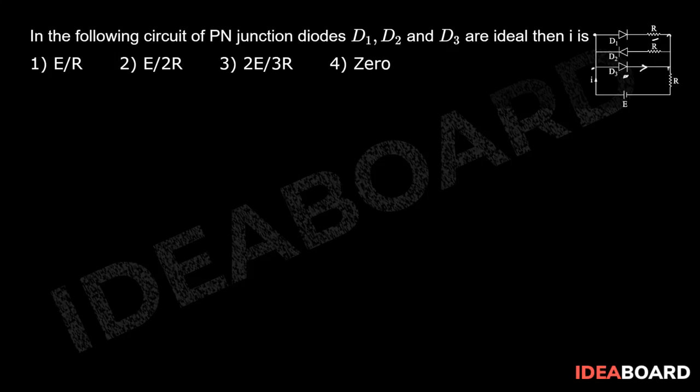We can write from Ohm's law that E will be equal to I into R equivalent. So I will be equal to E by R. So option number first is the correct answer of this problem.